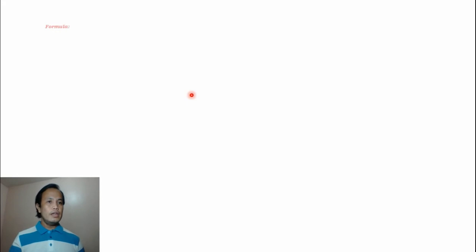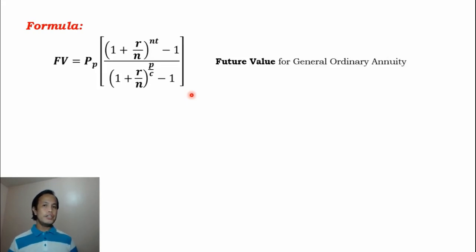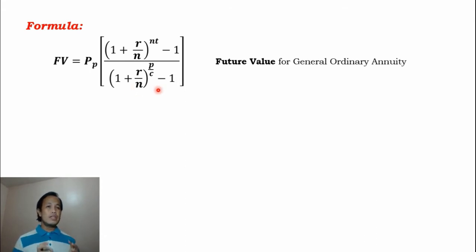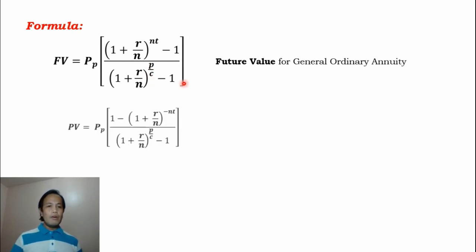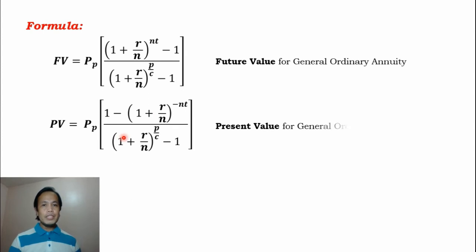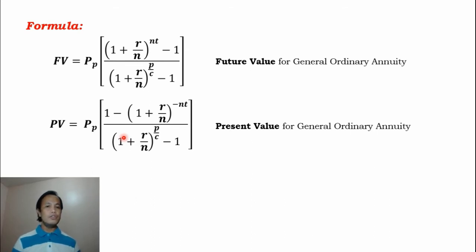This is the formula in finding the future value for general ordinary annuity. As you can see, this is much more complicated compared to the formula for future value in simple ordinary annuity, because all the components of the formula are included here. We have the periodic payment, and there is an additional component here which is P over C. We also have here the formula in finding the present value for general ordinary annuity, which is similarly more complicated.